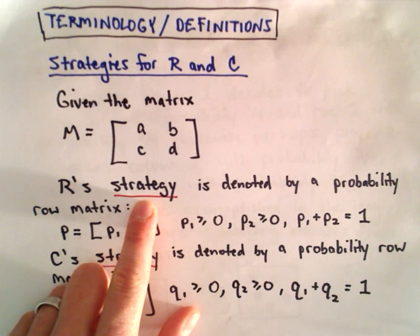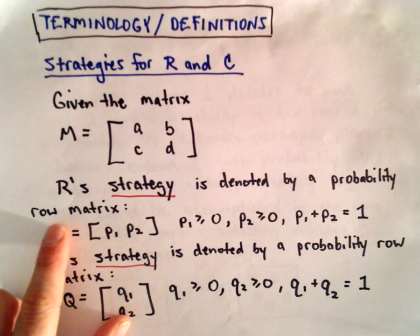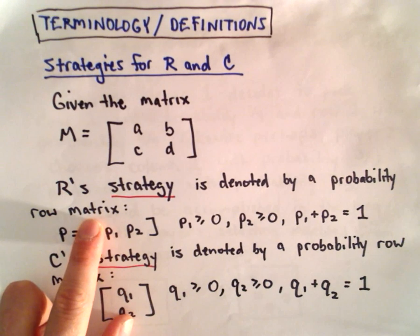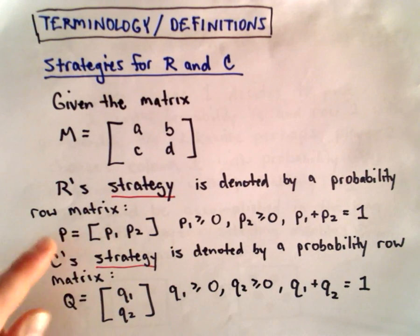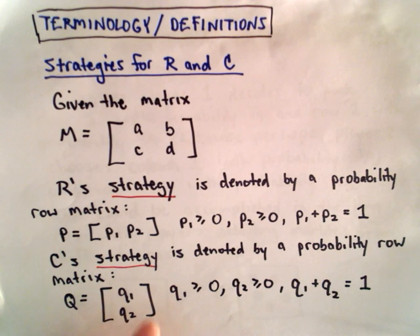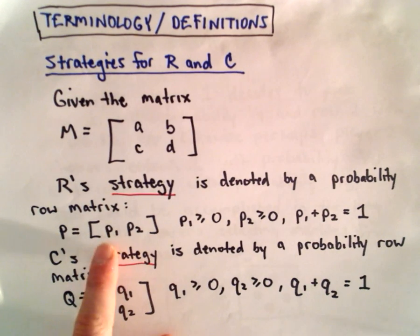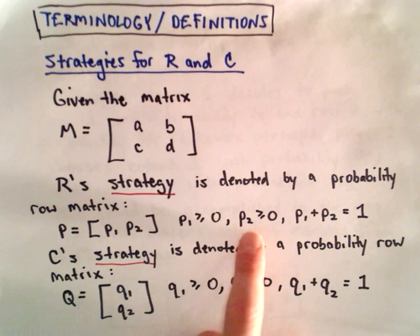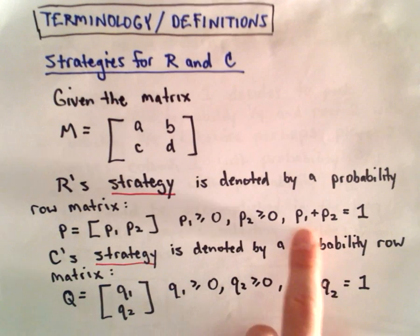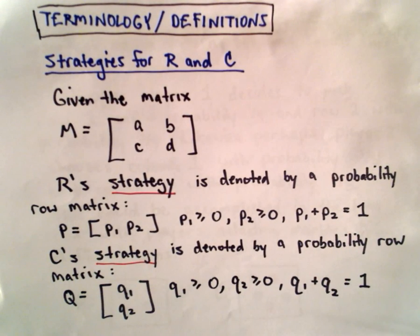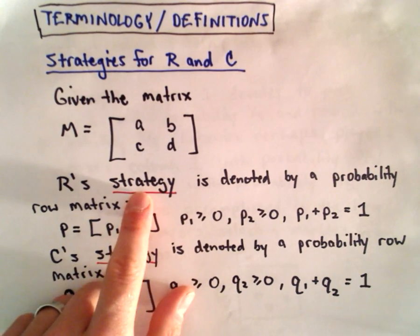R's strategy is going to be denoted by a probability row matrix. And the reason that we'll use rows and columns, that'll become apparent here in the next video. But suppose there's a probability row matrix with entries P1, P2. Both entries have to be greater than or equal to zero. And if we add them together, they add up to one. So just basic probability stuff. That's what's known as R's strategy. Basically those associated probabilities.